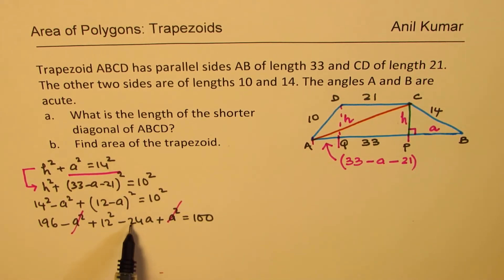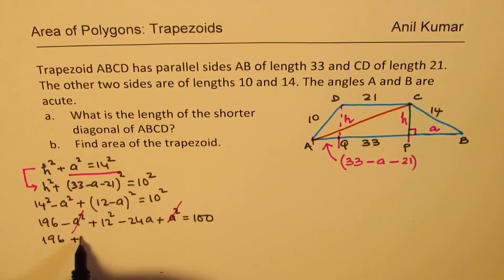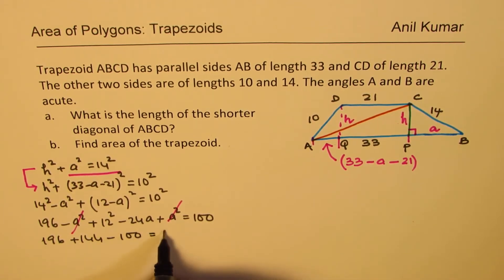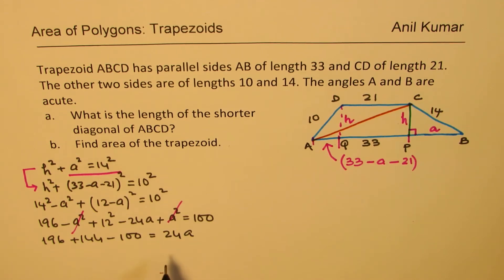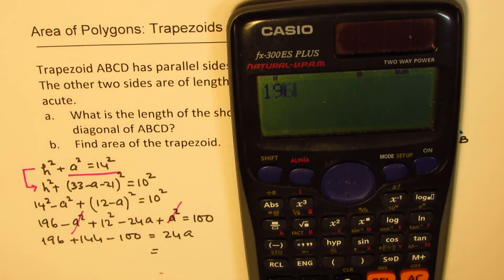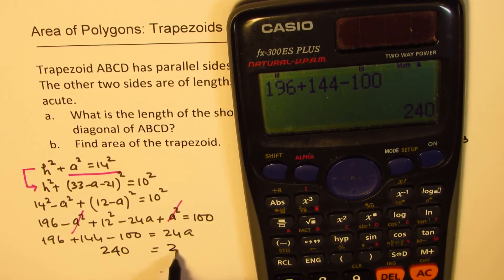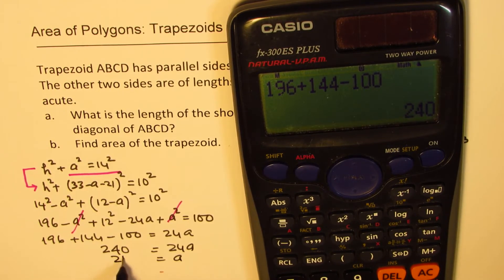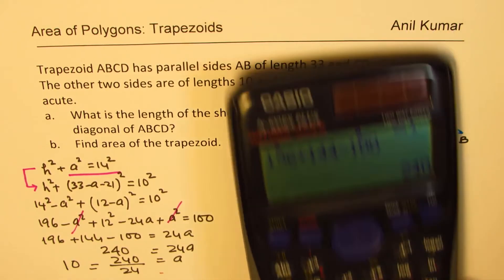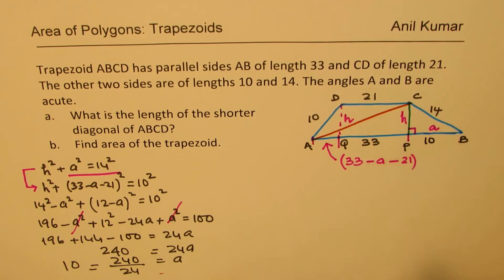This is a simpler linear equation to solve. We get 24A = 196 + 144 − 100 = 240. So A = 240 ÷ 24 = 10 units.